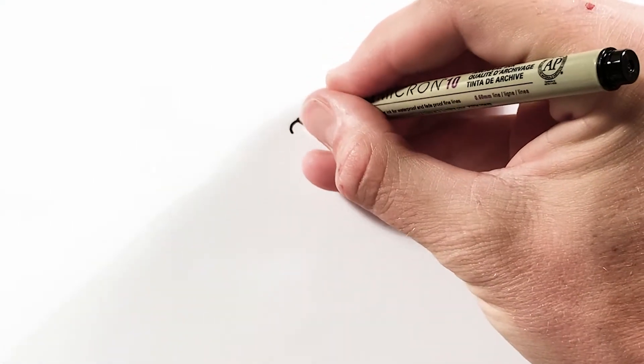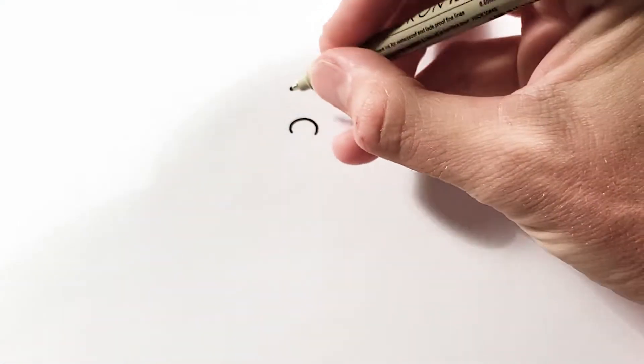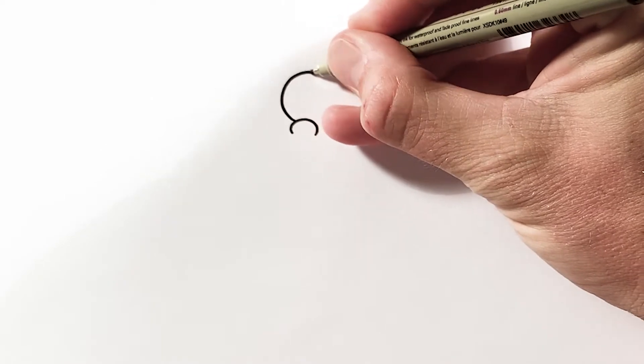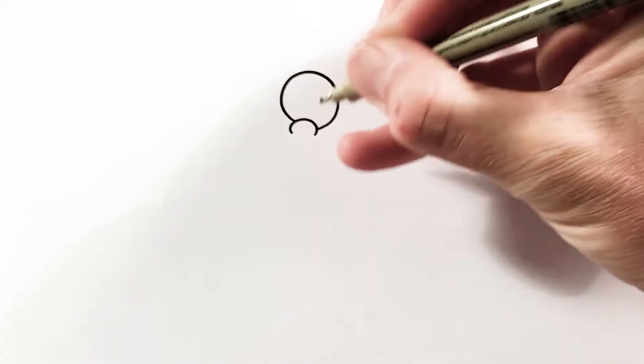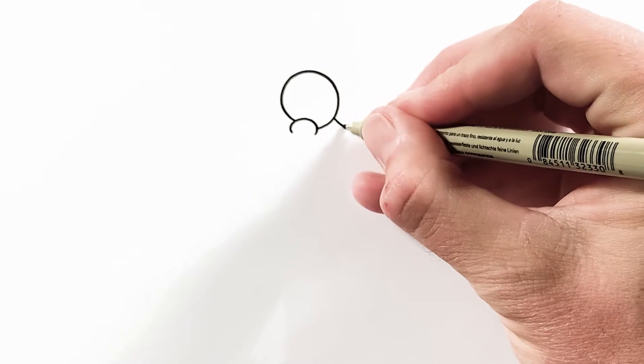I'm starting SpongeBob by drawing his cheek. That's because I can use the cheek to create the eye and can make a little connection from the eye down to his nose.